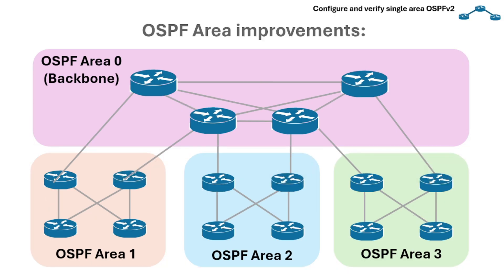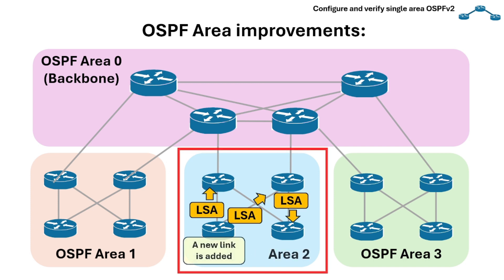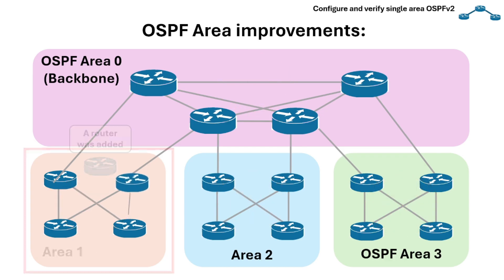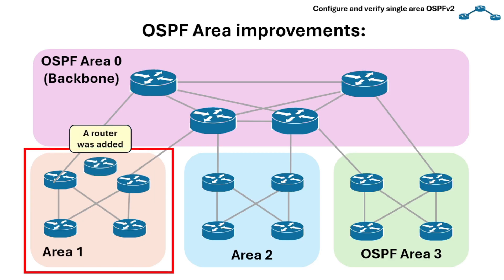The area concept has the following improvements. LSAs are only flooded into the area when we add a new link — the LSA update is only sent to the routers in that area. Each area also has its own link state database, or LSDB. Since LSAs are only flooded within an area, this makes the database smaller and doesn't require too much CPU and memory. And changes in one area do not affect other areas, which improves convergence time.